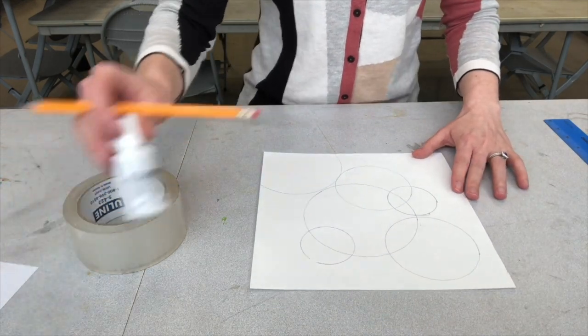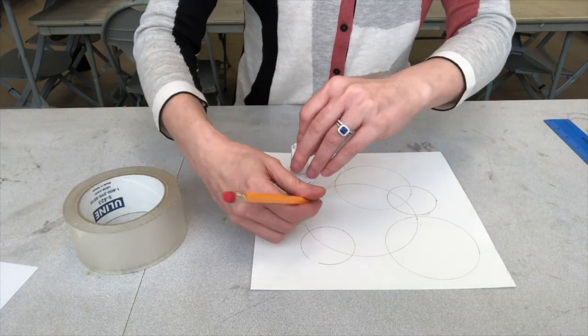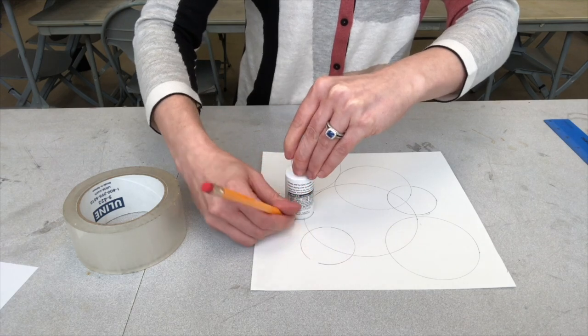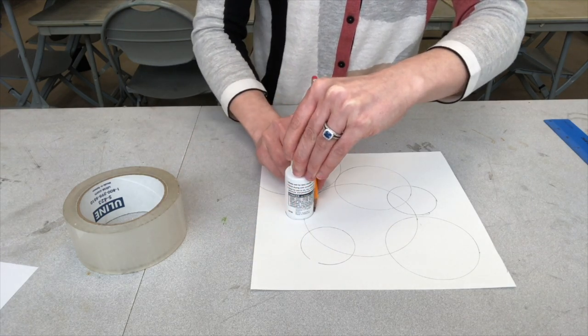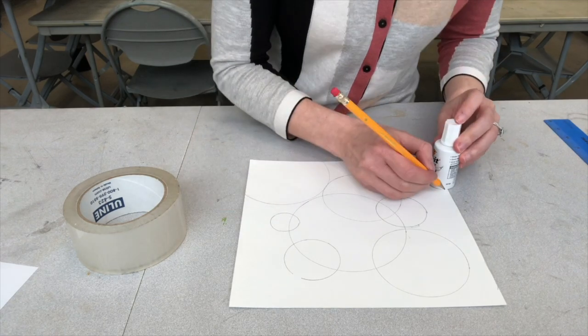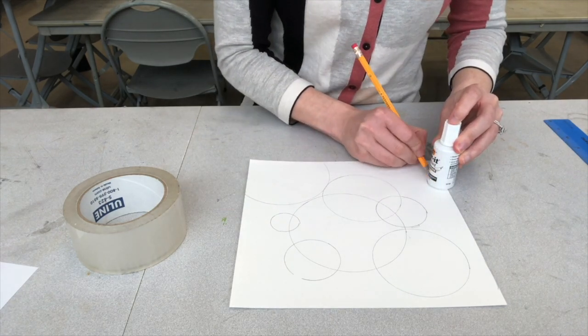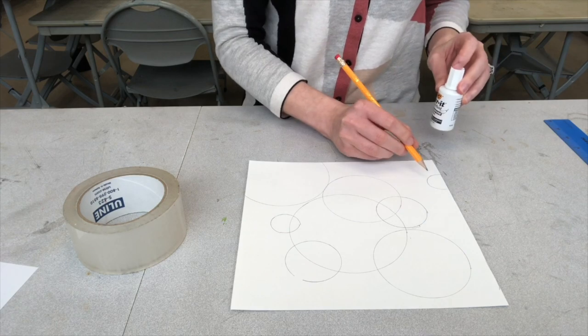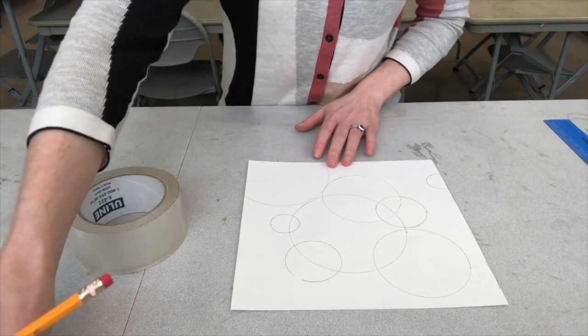Okay, and I want to add some small circles. So I'm going to take my small bottle and trace that. And you can also have some circles that are going off of your paper. So you trace them and you can see they hang off of the paper.